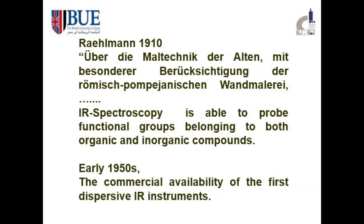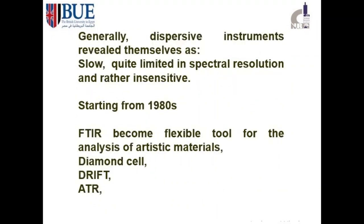Dispersive instruments revealed themselves as slow, quite limited in spectral resolution, and rather insensitive. By the 1980s, FTIR became more flexible as Fourier transform processing was added to infrared spectroscopy. Analysis became more realistic and more artistic materials could be analyzed with FTIR, thanks to diamond cells, DRIFT, and attenuated total reflection, facilitating the study of artifacts as a non-destructive technique.